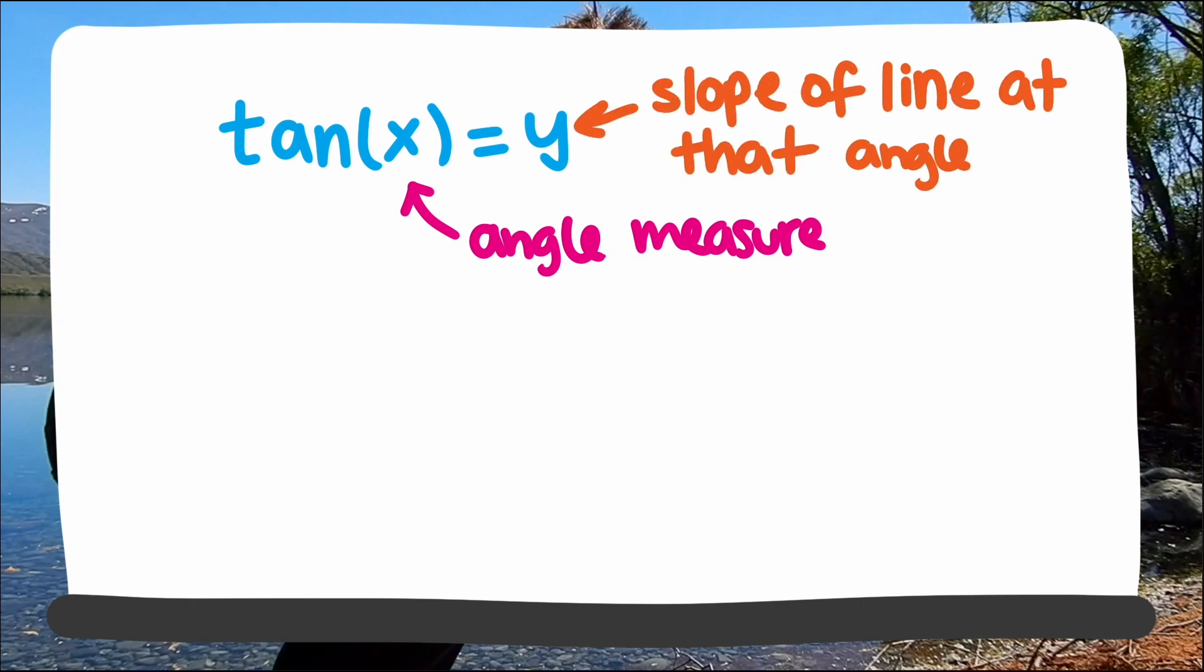Inverse tangent, or sometimes called arc tangent, takes in a slope as an input and outputs the angle in degrees or radians. Now we can reason what the tangent of 45 degrees is. It will be 1, because the line with slope 1 goes up 1 unit for every unit we move to the right.